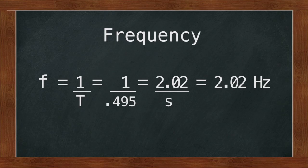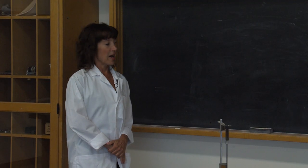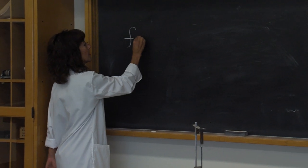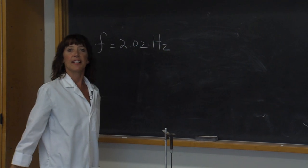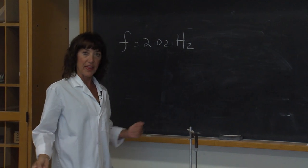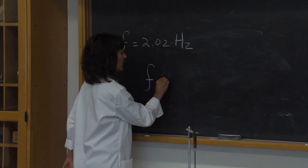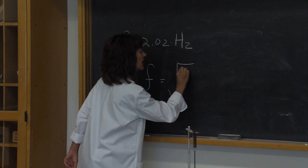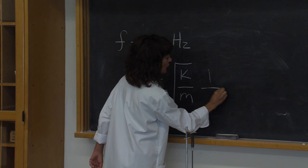Now I can calculate my second value for k. With my value for frequency, which was 2.02 hertz, I could calculate k with this second method. I have an equation which states that the frequency is going to equal the square root of k over m times 1 over 2π.